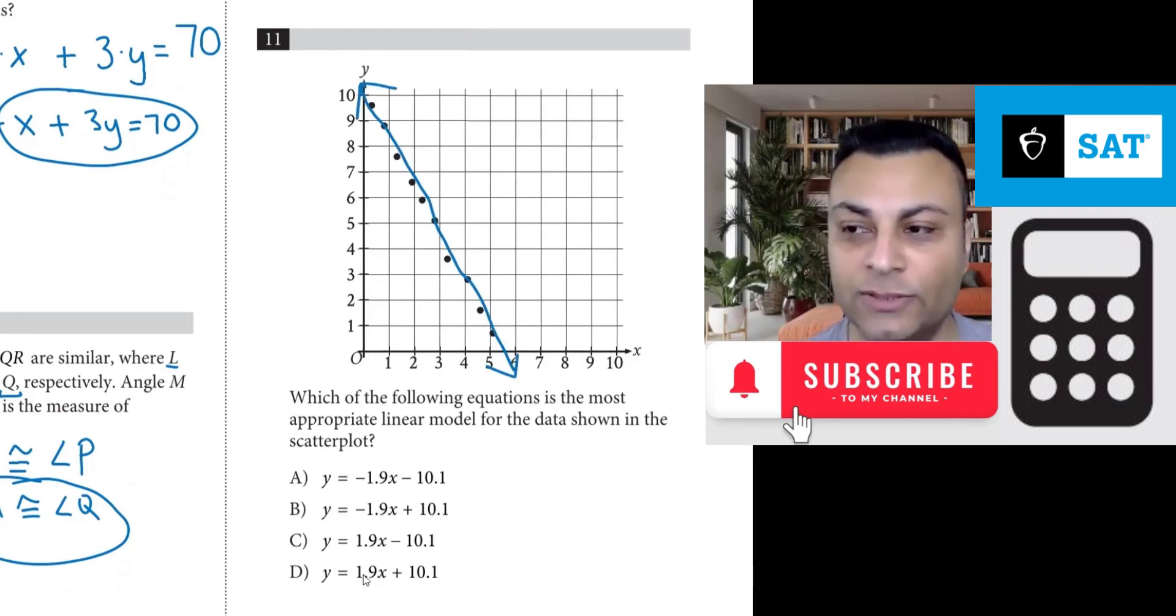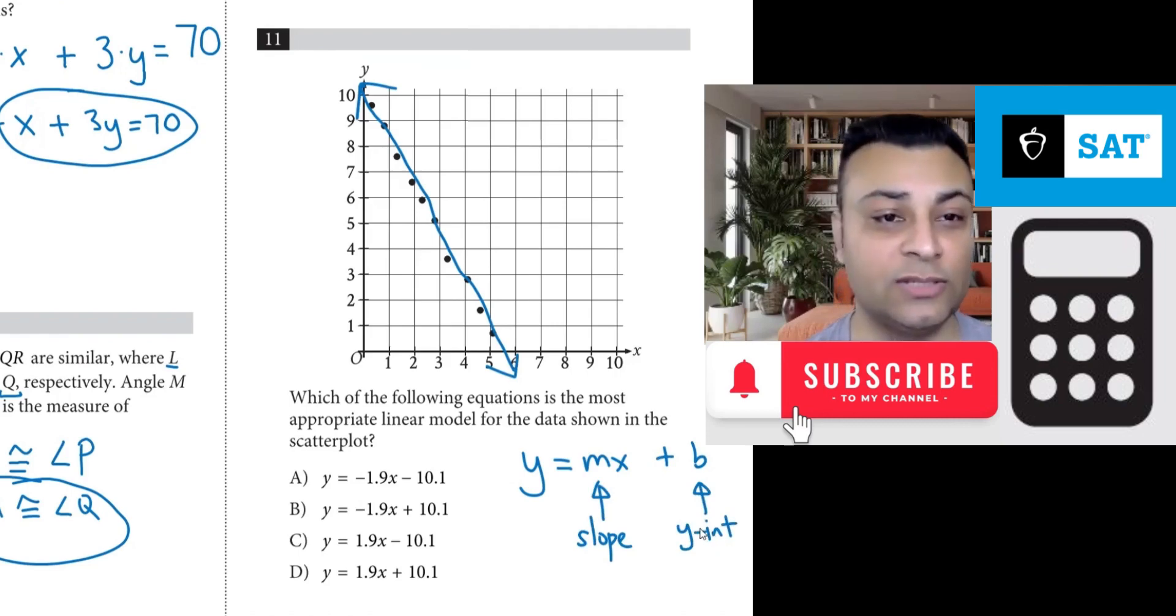But we do have four options, and one thing we note is that for linear equations y = mx + b, this m here is the slope of the line, and this b here is the y-intercept, the place that it crosses the y-axis.